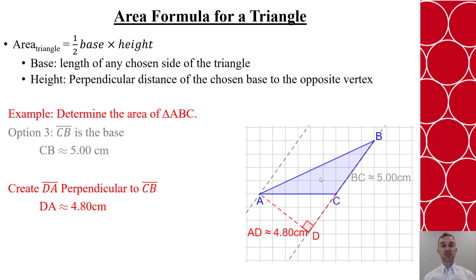Now I can multiply, and we'll multiply the 5 centimeters by 4.8 centimeters divided by 2. Using the three significant digits, it's approximately 12 square centimeters.